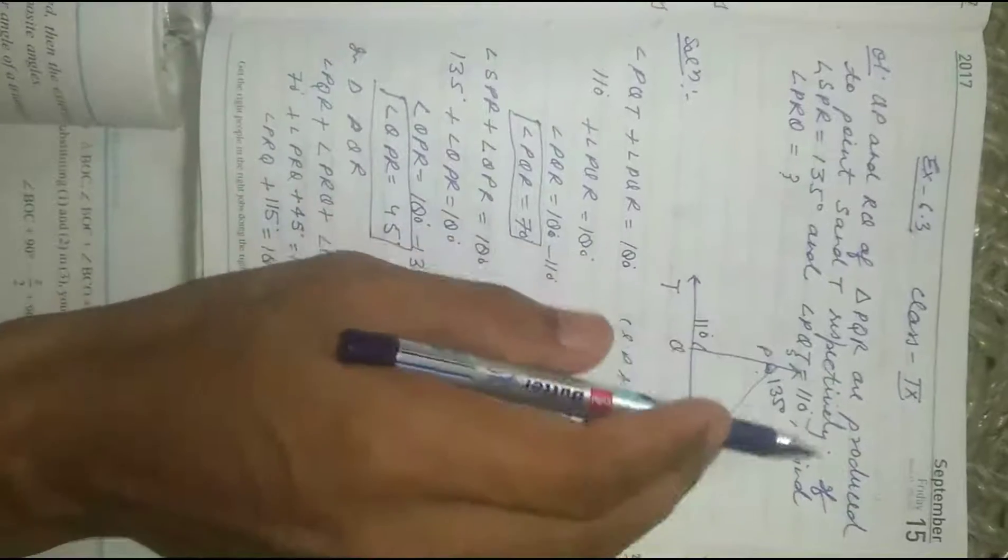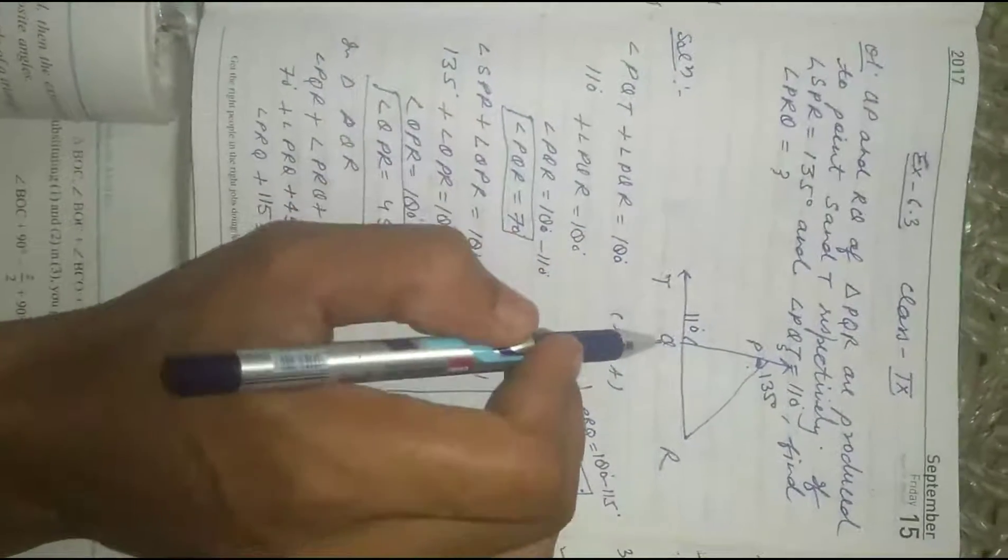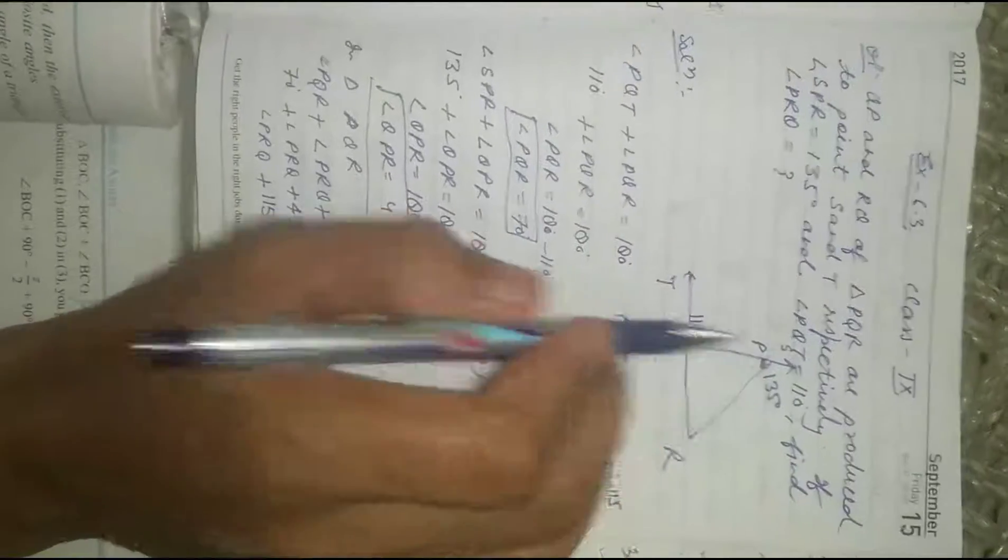Triangle PQR is produced where QR is extended to point T, and PQ is extended to point S.